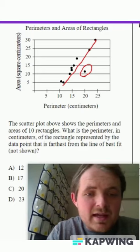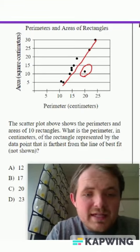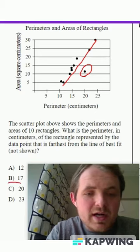And that's actually what the question is asking. What is the data point that is farthest away from the line of best fit? And I believe it would be that one right over there, which has a perimeter of 20.